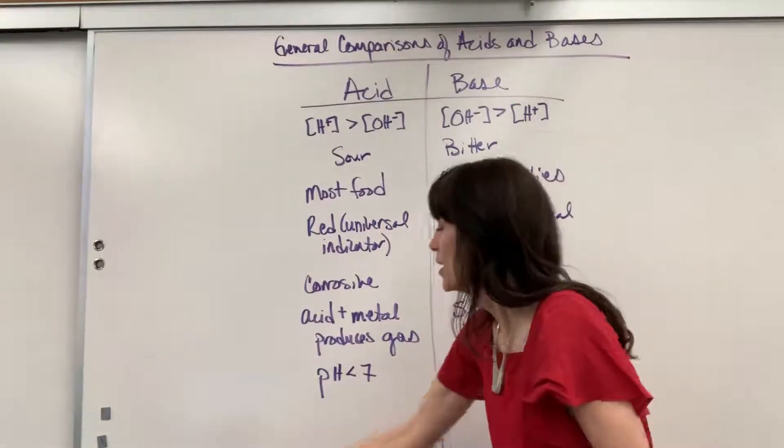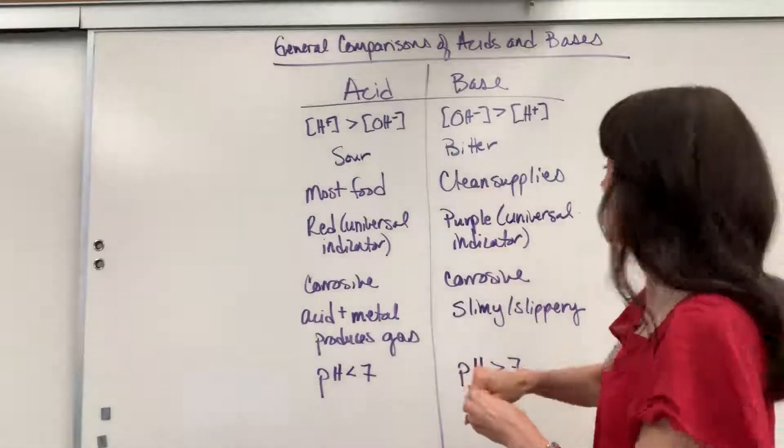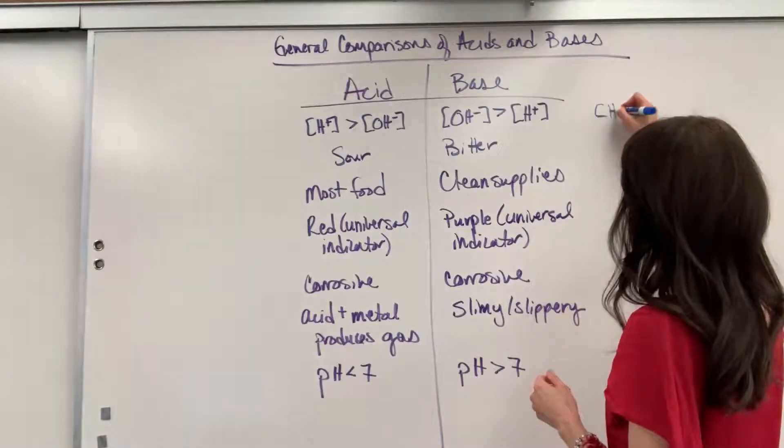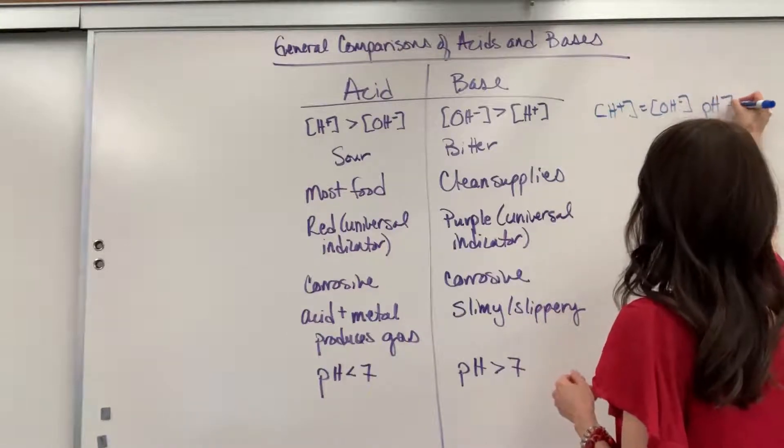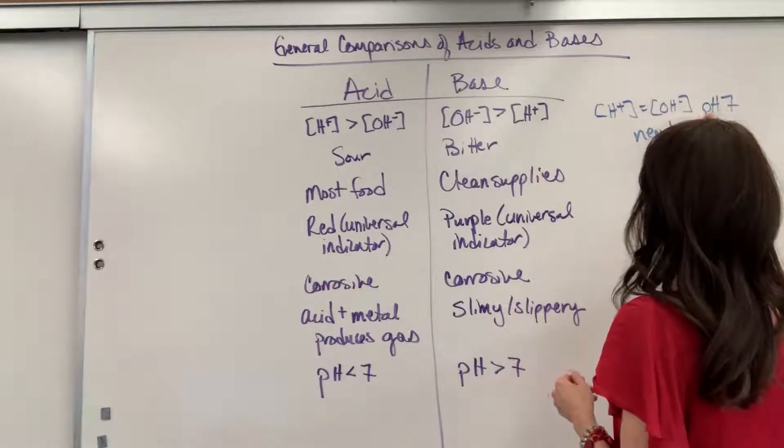And then really special, remember that if we have the hydrogen equal to the hydroxide concentration, that is the pH of seven, and that is neutral.